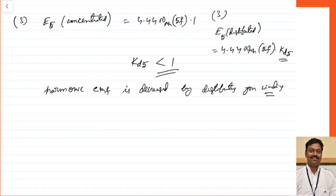Summarizing the two advantages: first, MMF becomes more sinusoidal — the trapezoidal wave approaches a sine wave. Second, the harmonic contents are less because the harmonic EMFs are less for higher order harmonics due to the distribution factor compared to concentrated winding. The disadvantage is EMF per phase is decreased because it is the vector sum, not the scalar sum, reduced by the factor Kd — that is the only limitation of distributed winding.